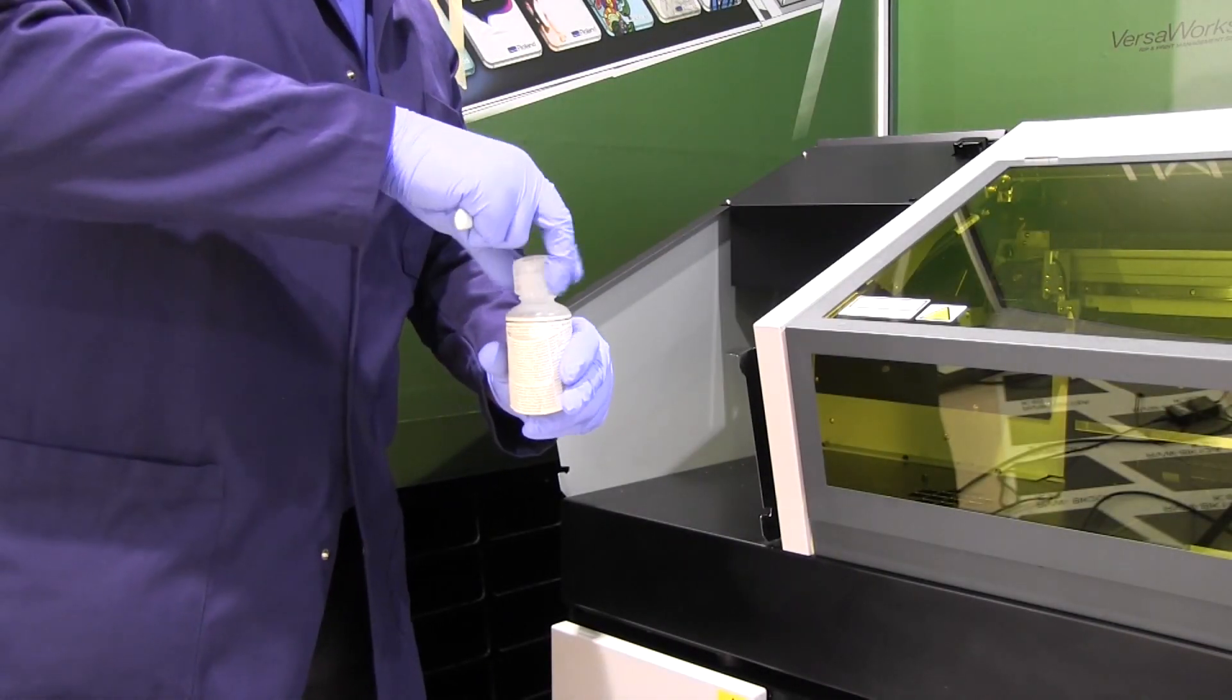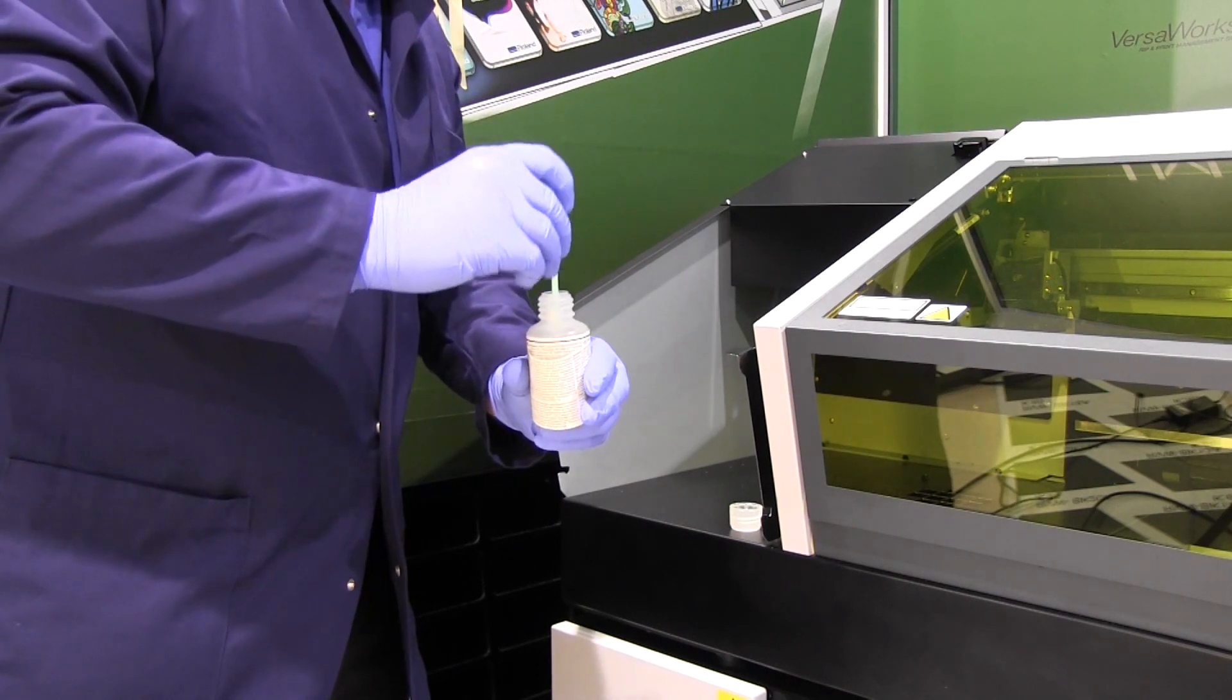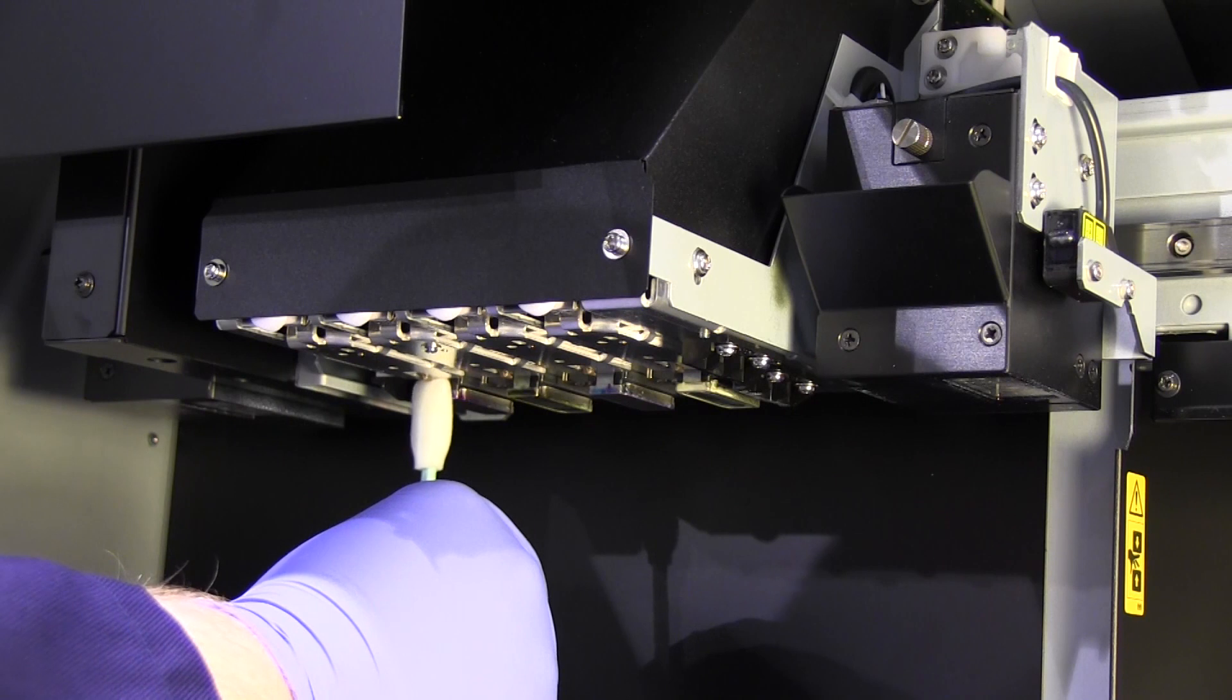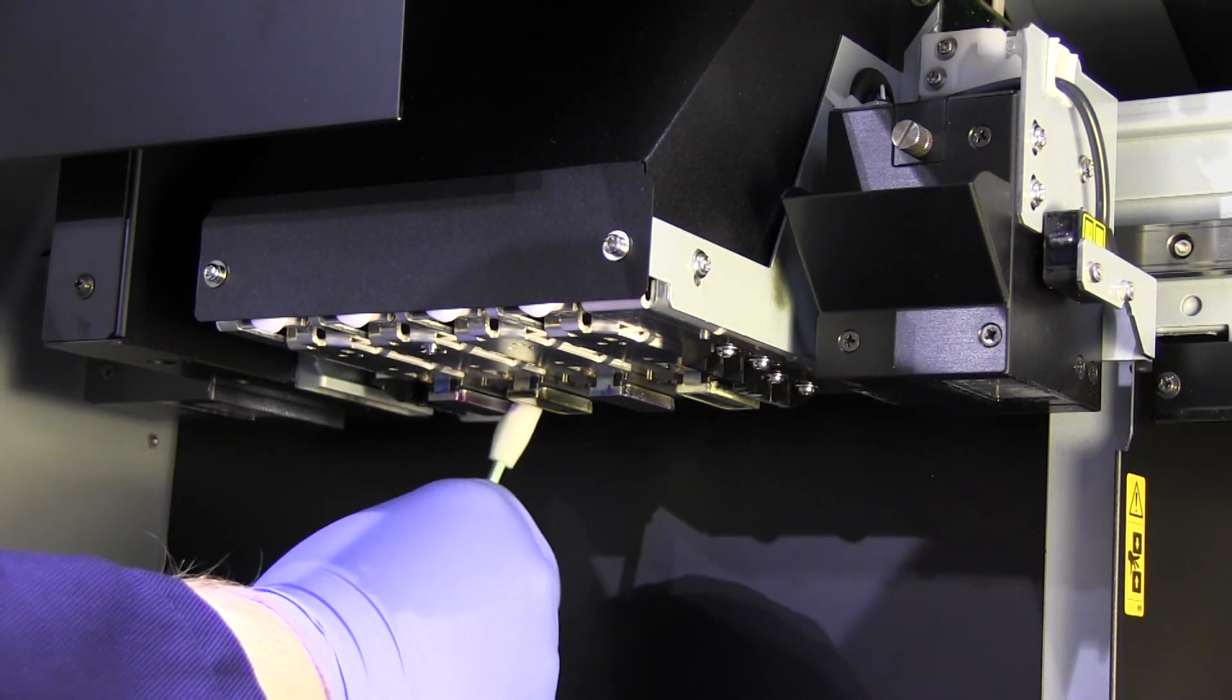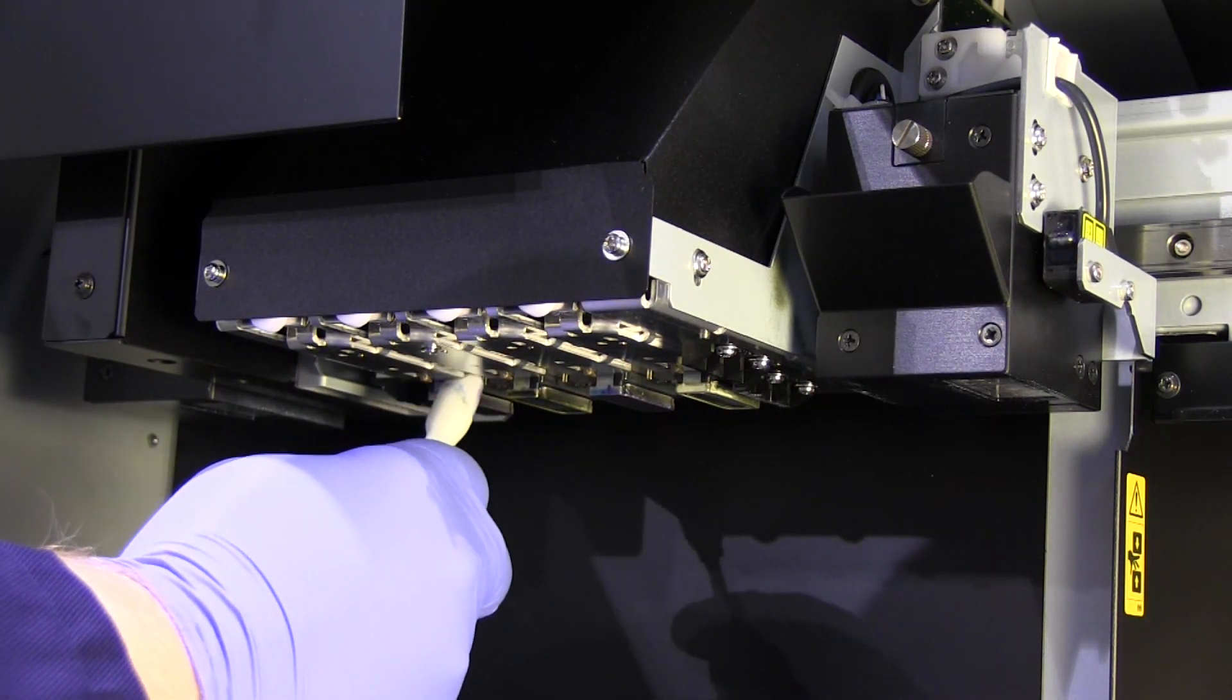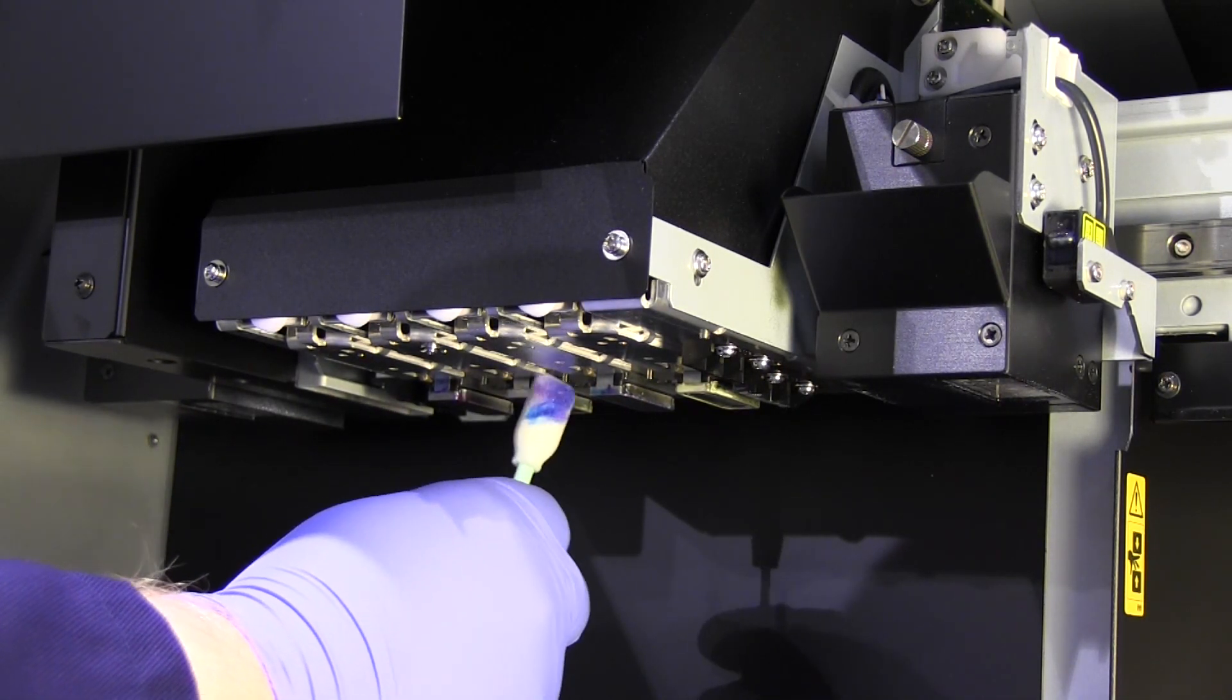Using the cleaning solution for the machine, dip a cleaning swab into the bottle and wipe off any excess. Here we are going to clean the print head surrounds. We are looking to clean off any excess ink from the print head frame and the black plastic head surround. Note that we do not clean the print head surface.